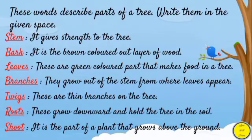These are the parts of a tree: stem, bark, leaves, branches, twigs, roots — these make the complete tree. Children, these words describe parts of a tree. Write them in the given space and complete it.